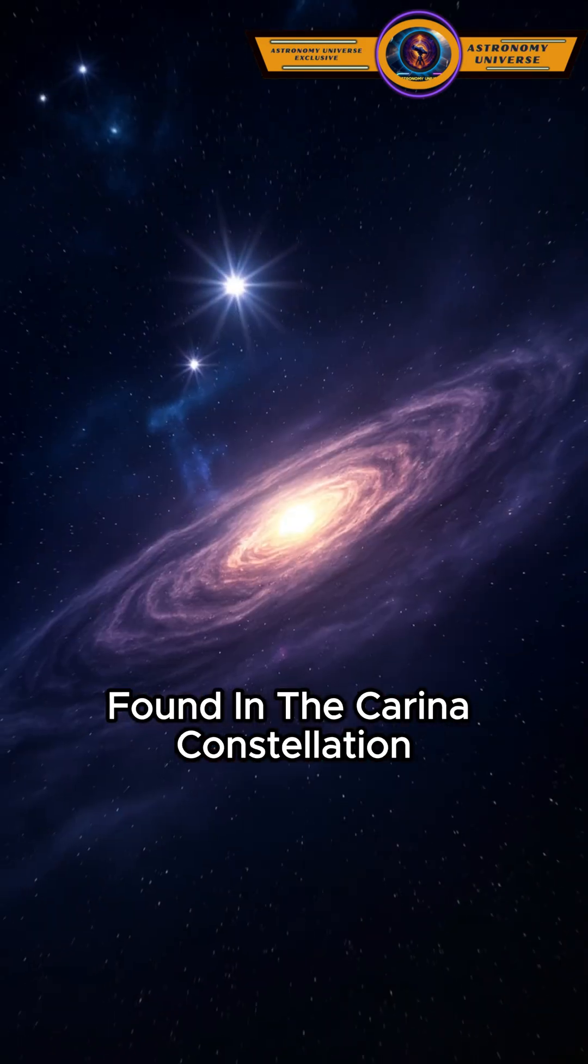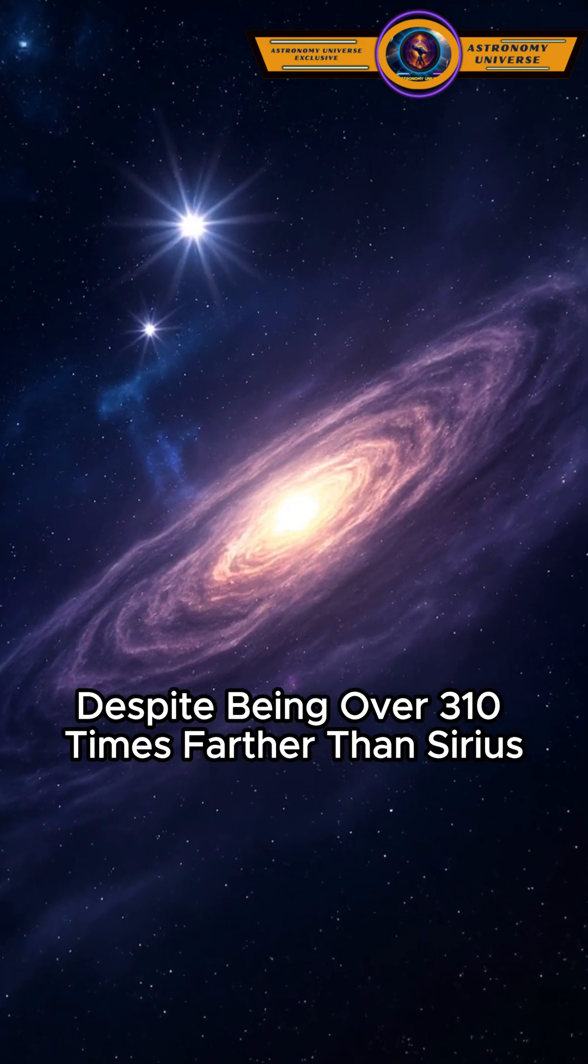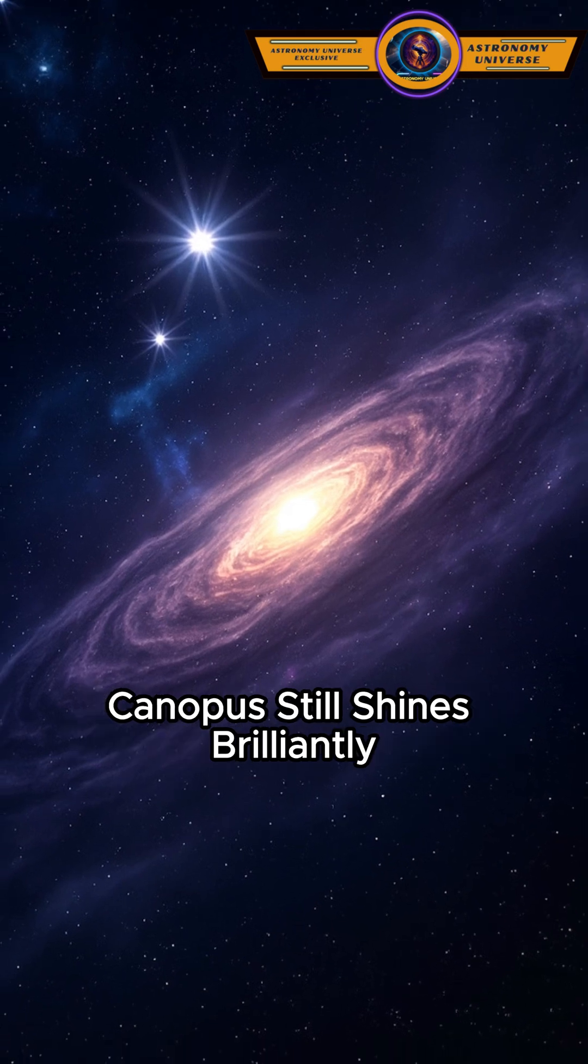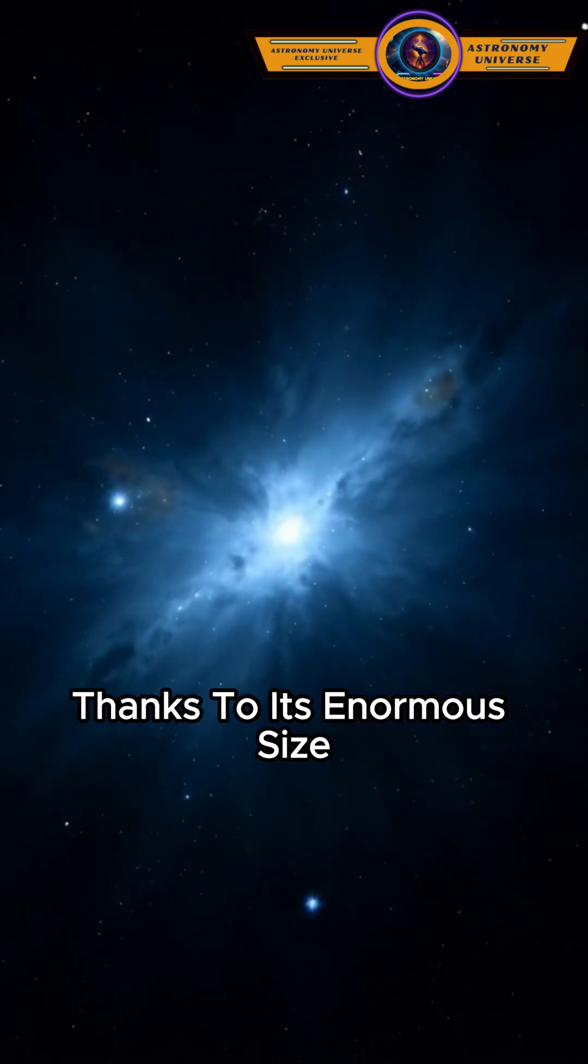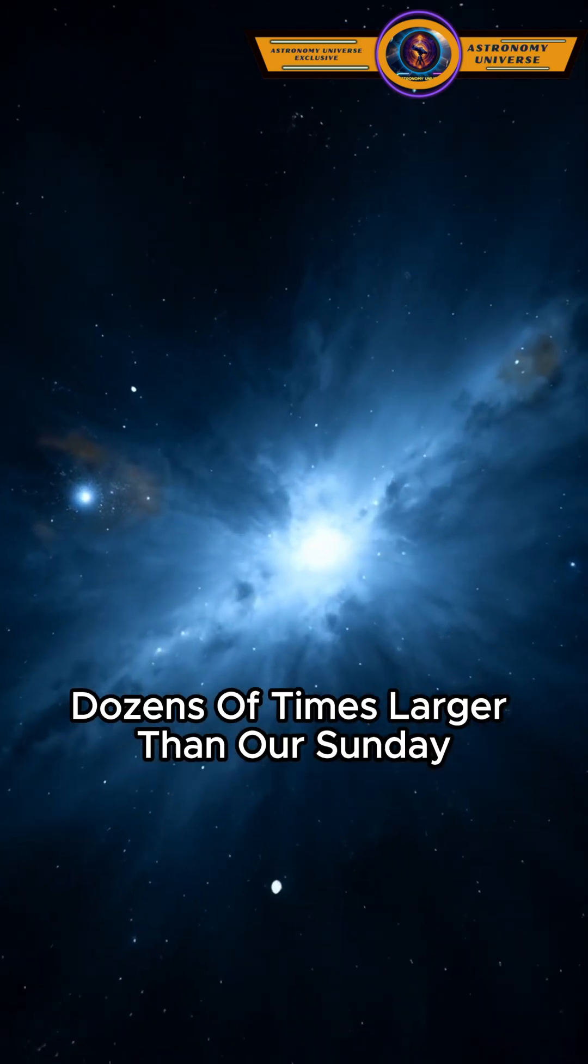Next comes Canopus, the second brightest star, found in the Carina constellation. Despite being over 310 times farther than Sirius, Canopus still shines brilliantly thanks to its enormous size—dozens of times larger than our Sun.